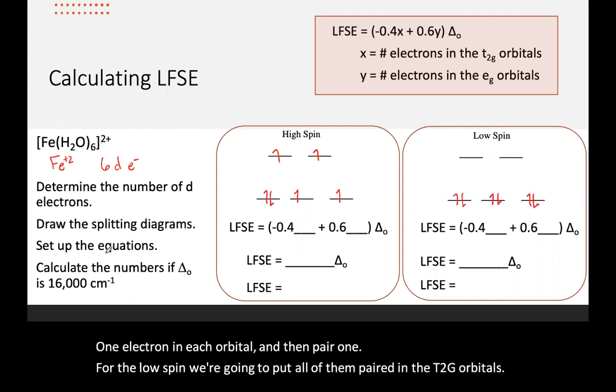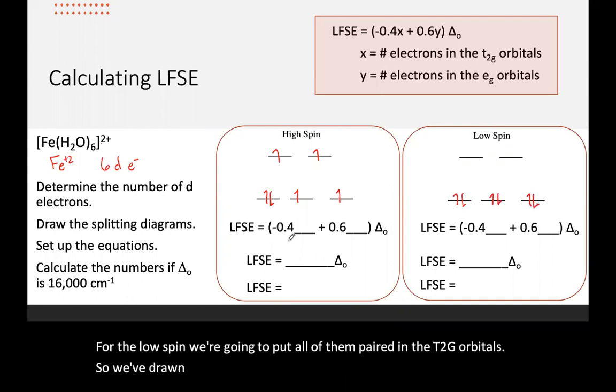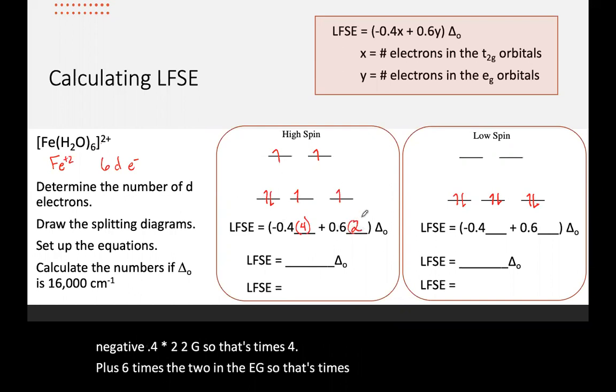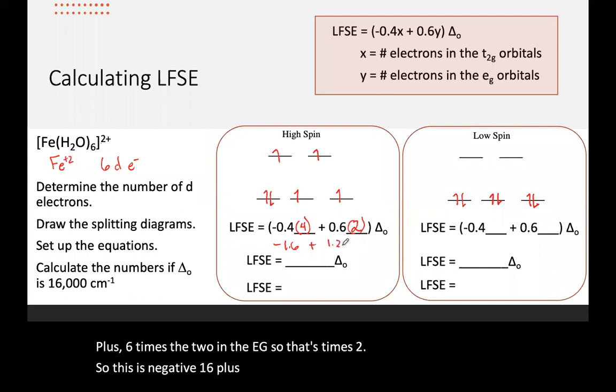So we've drawn the diagrams, we set up the equation. This is LFSE equals negative 0.4 times t2g, so that's times four, plus 0.6 times the two in the eg, so that's times two. So this is negative 1.6 plus 1.2 times delta O.